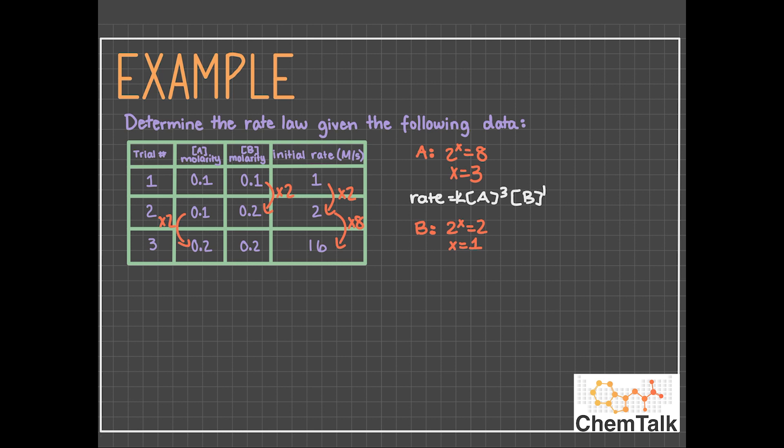For reactant B, its concentration doubles from trials 1 to 2, and the rate also doubles. So 2 to what power is 2? That is 1, so B is a first order reactant.